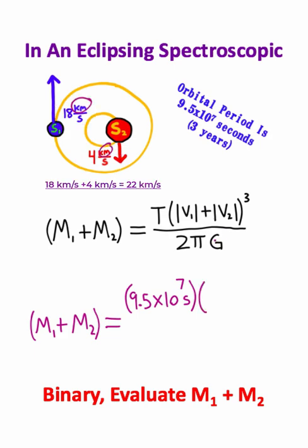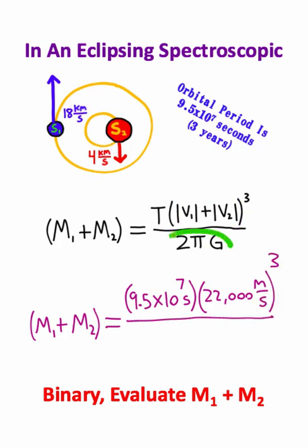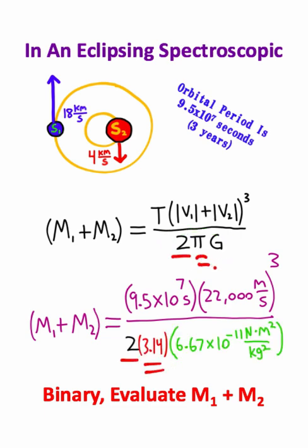And if I change the kilometers to meters, I'll have 22,000 meters per second as the added velocities, and the last thing I need is to plug in the denominator of this fraction. So we have 2, we have the approximate value for pi, and we also have Newton's gravitational constant, which is this number down here.